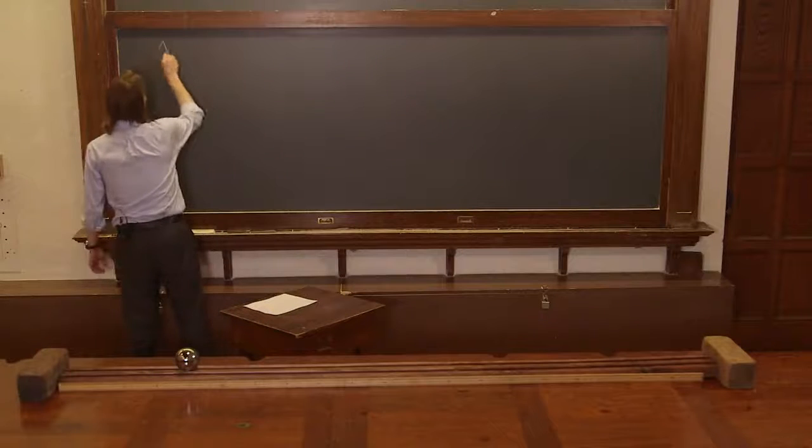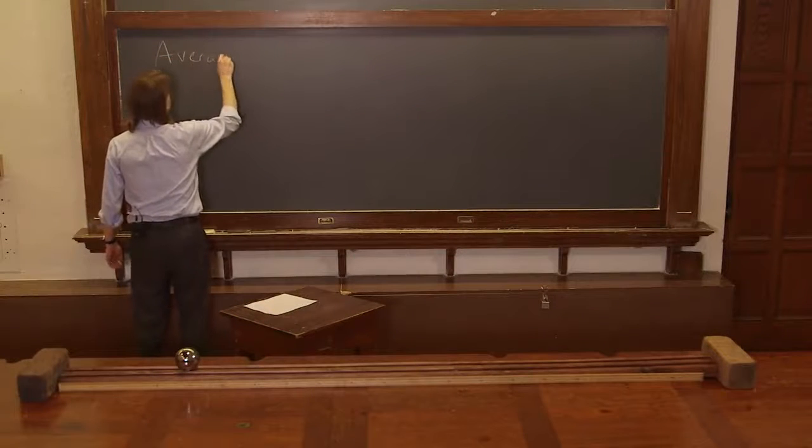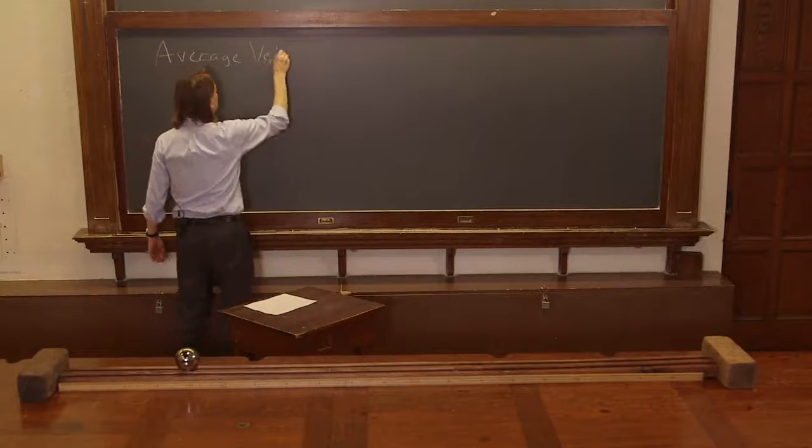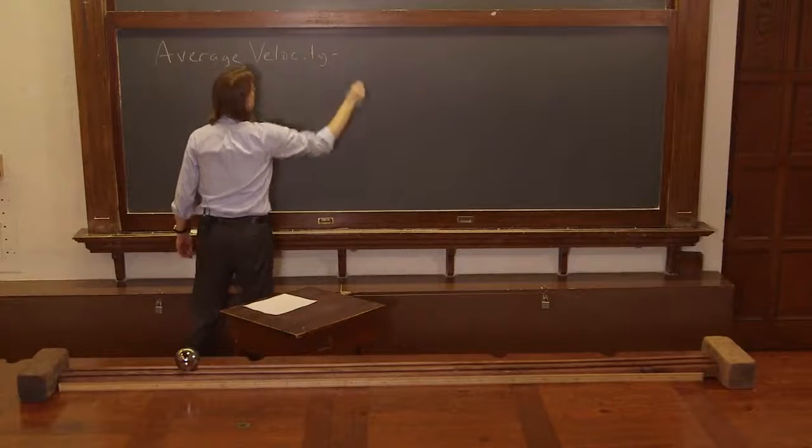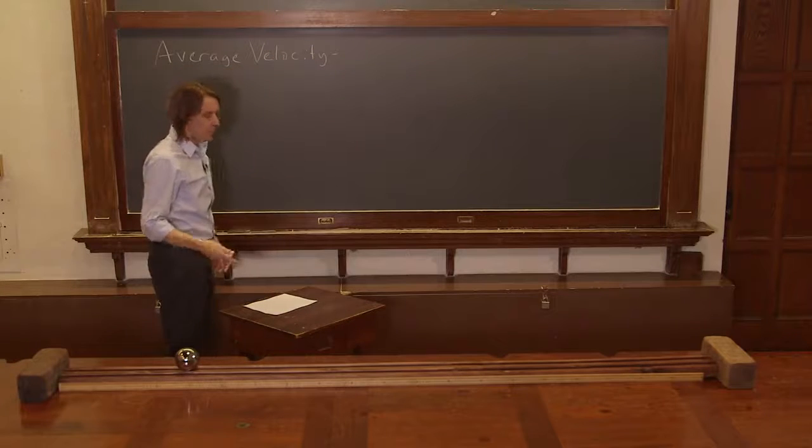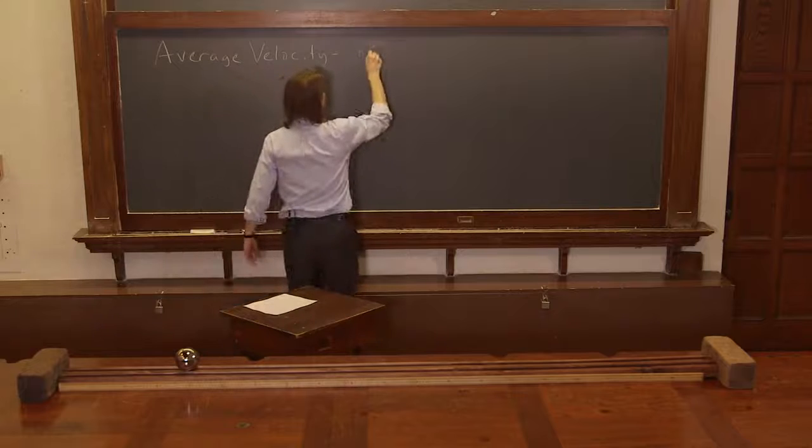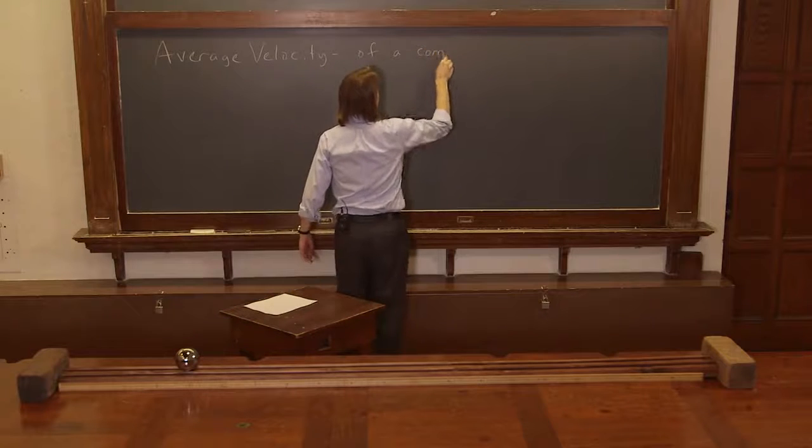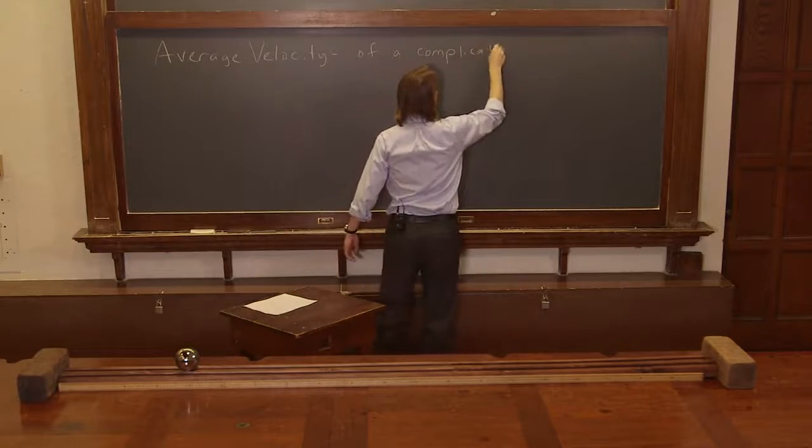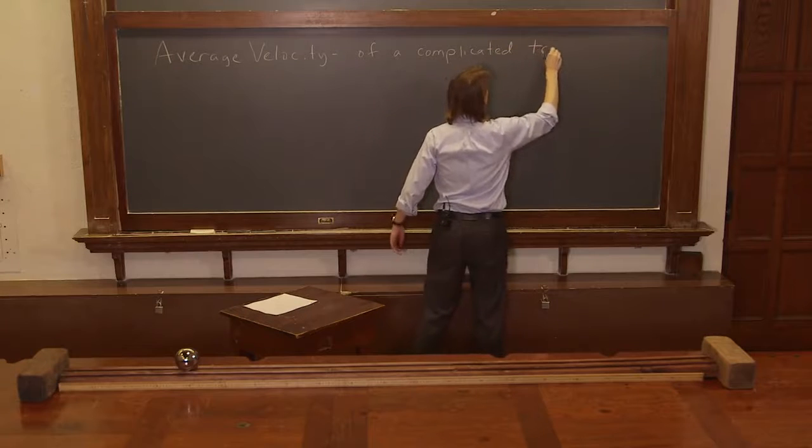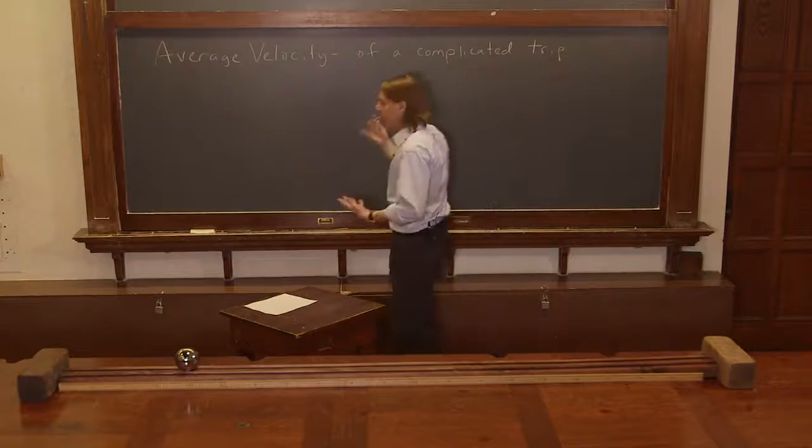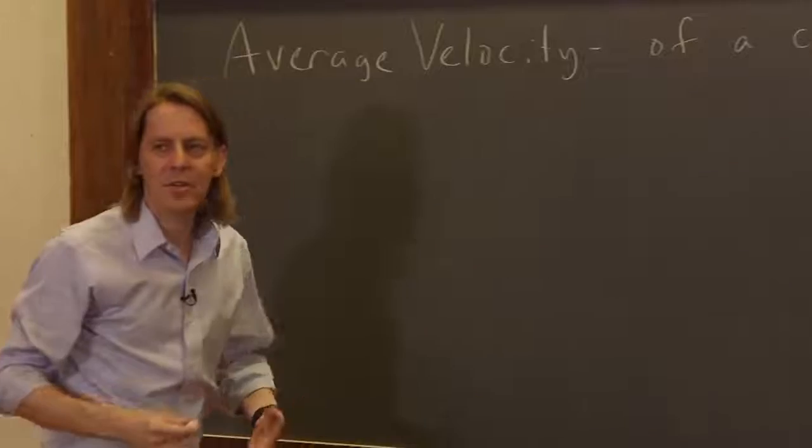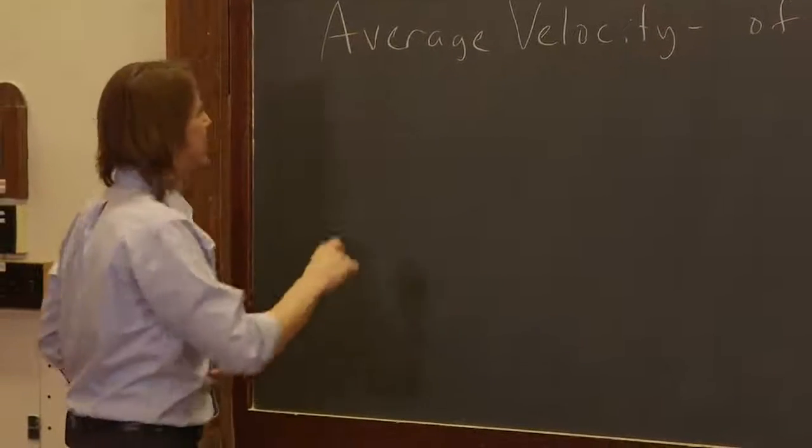Now let's look at average velocity. So average velocity, you use it to describe a complicated trip. So we told you what velocity is, essentially, now we're going to say a little more specific, average velocity.